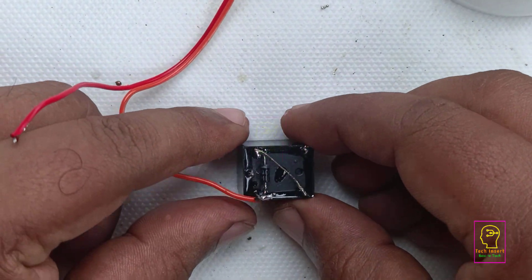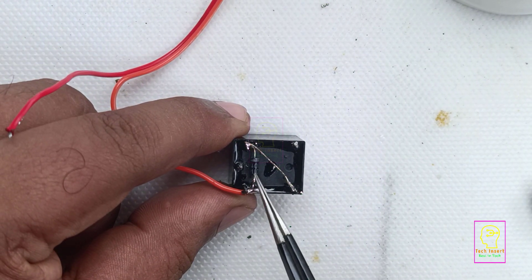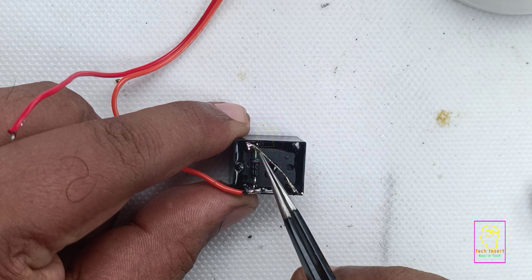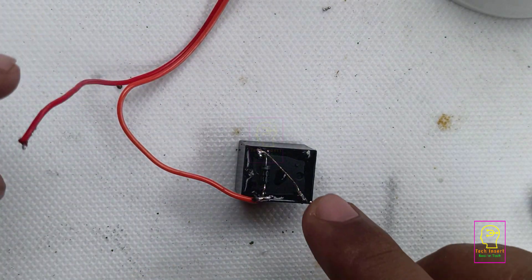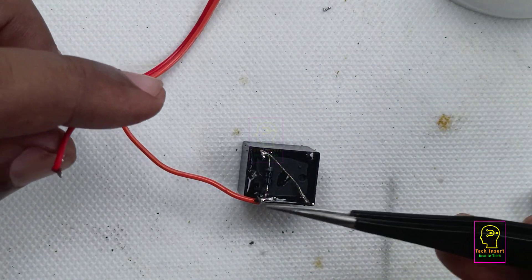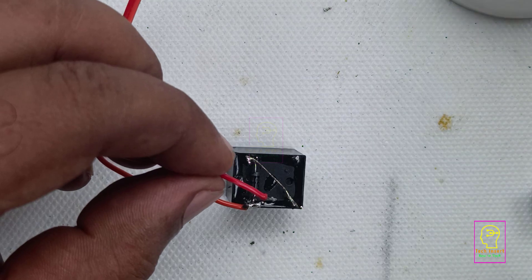This is very simple and very much understandable connection. What I am doing is I have connected one terminal of the coil to the normally closed terminal of the relay. And I am going to solder the positive terminal of the load to the same normally closed terminal of the relay.